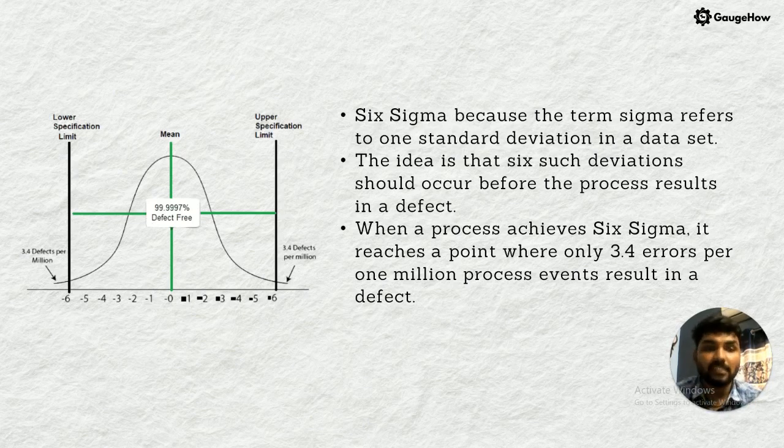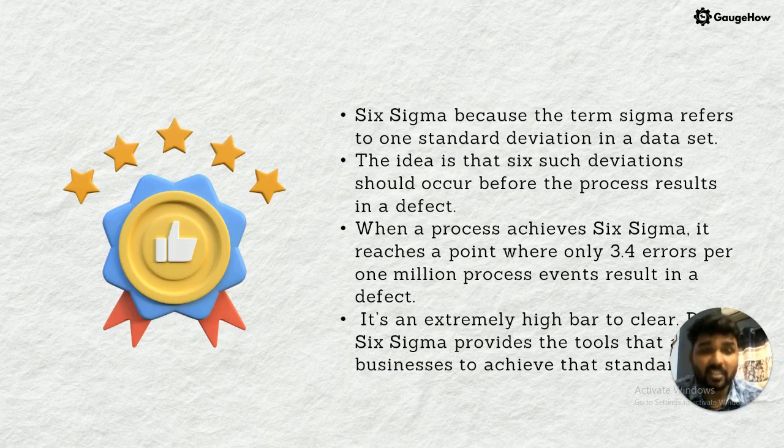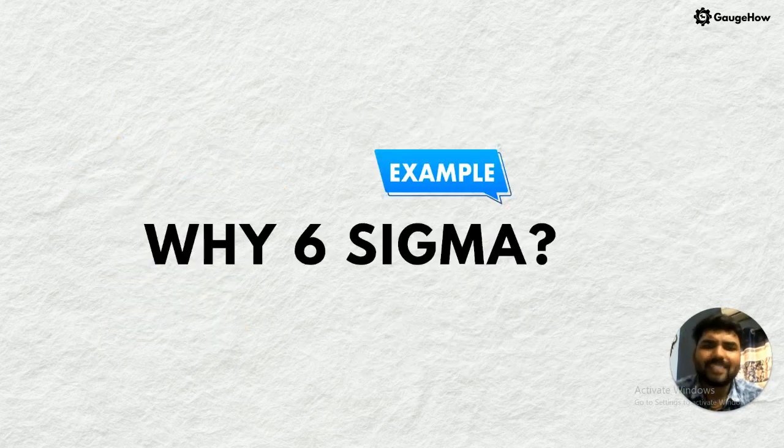When a process achieves Six Sigma, it reaches a point of only 3.4 defects per million probability of defects. Only 3.4 defects per million opportunities. Then only the sigma will reach 99.999997 percentage. It is an extremely high bar to clear. Six Sigma provides the tools to achieve this in business processes.